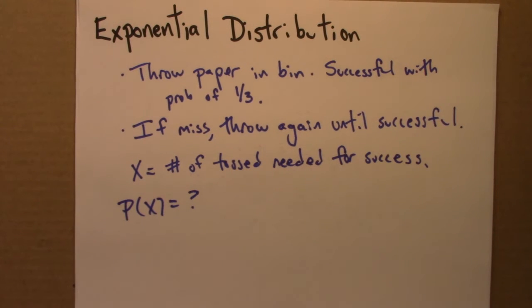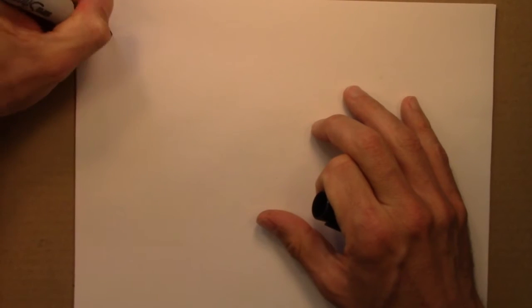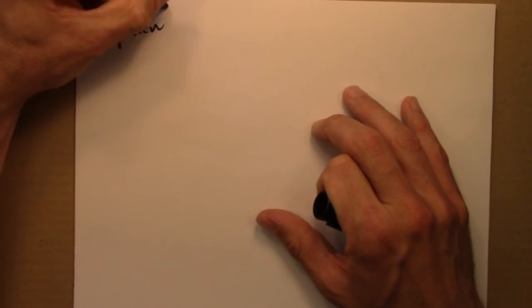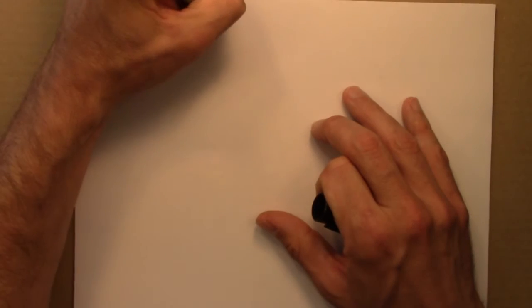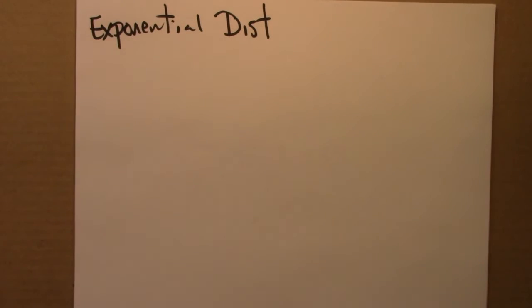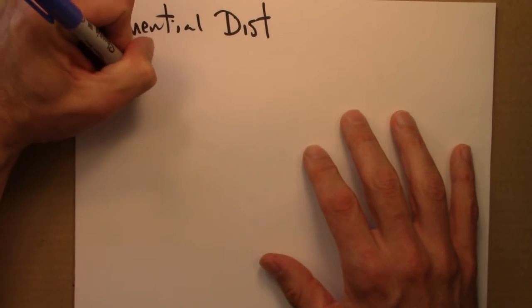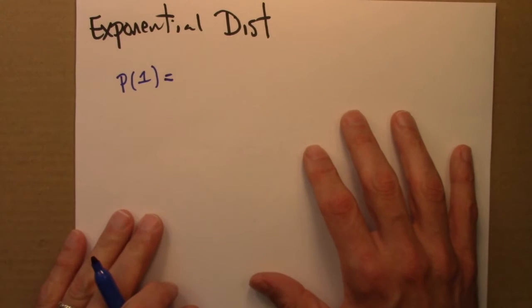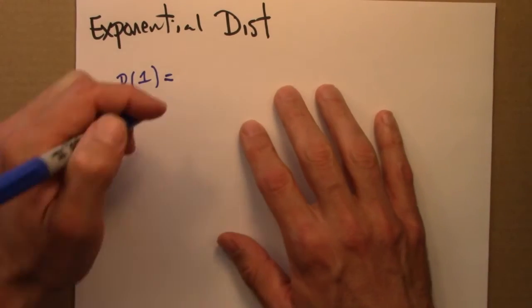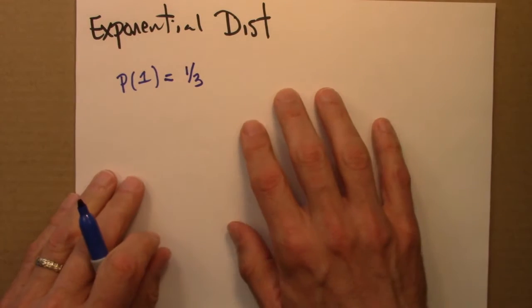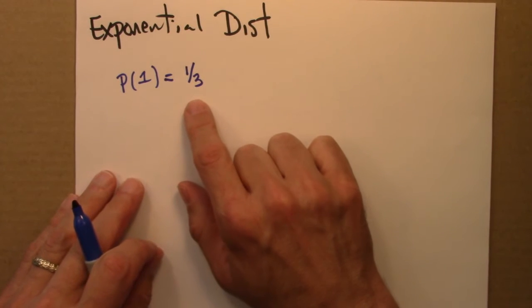So for this case, we can calculate that more or less directly. So let's see how that would go. Again, exponential distribution. So let's see. What's the probability that I only need one throw? Well, that is just a third. Because a third of the time, I'm successful at this paper throwing game.